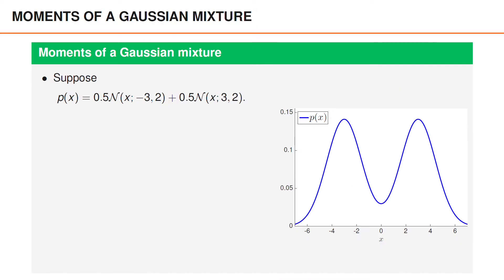Let us look at an example where we have a Gaussian mixture and want to compute its mean and covariance. Suppose the Gaussian mixture is such that with probability 0.5 we have a Gaussian density with mean minus 3 and variance 2 and with probability 0.5 we have a Gaussian density with mean 3 and variance 2. This density is illustrated in this figure.